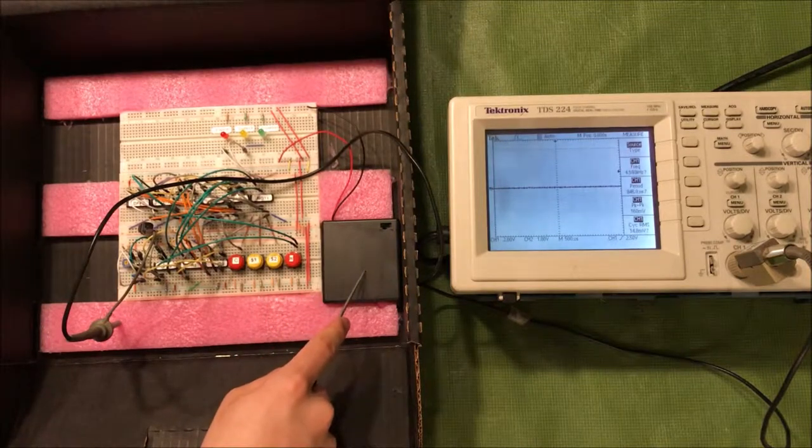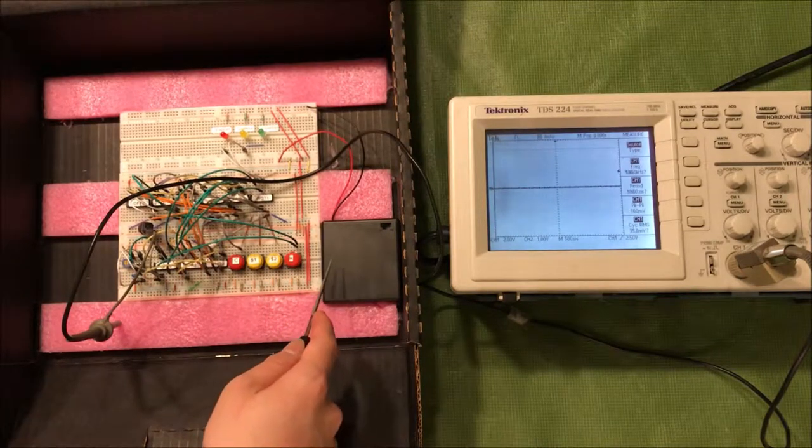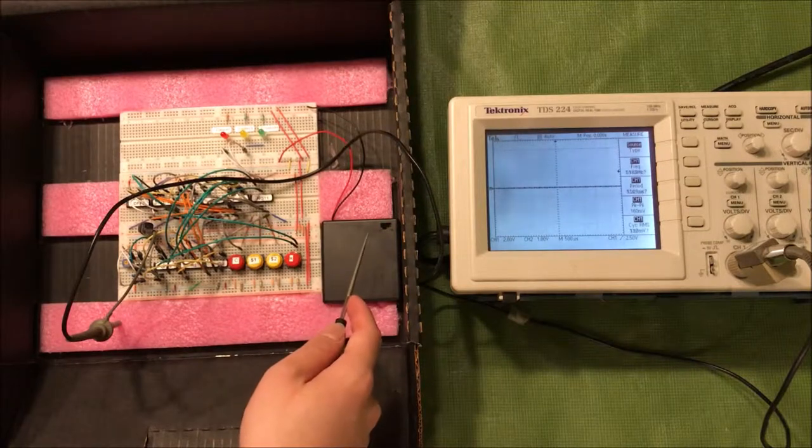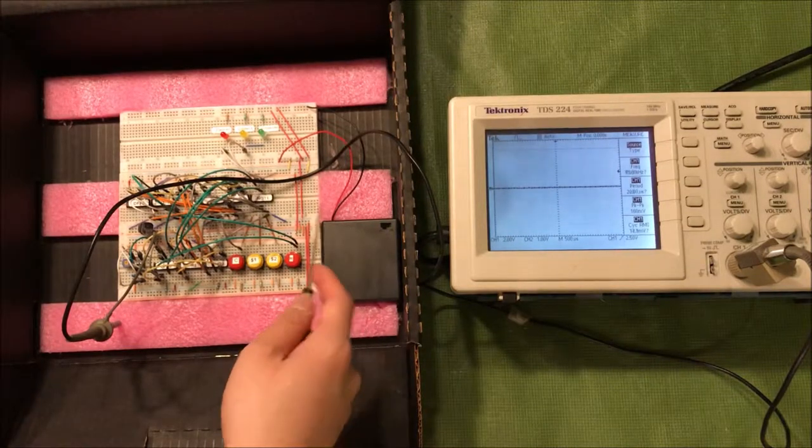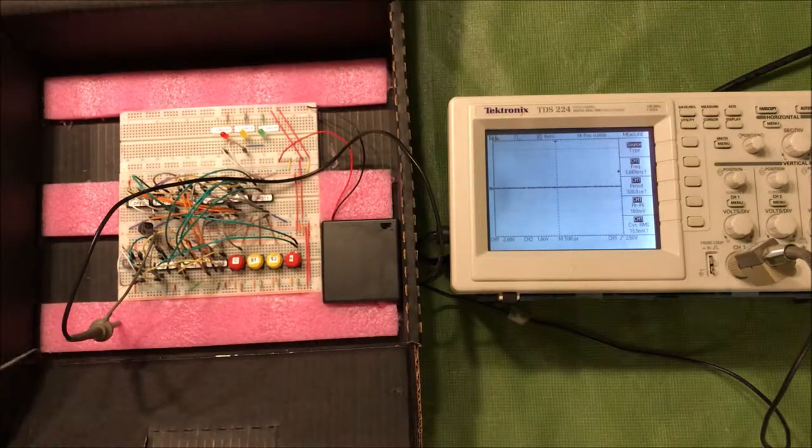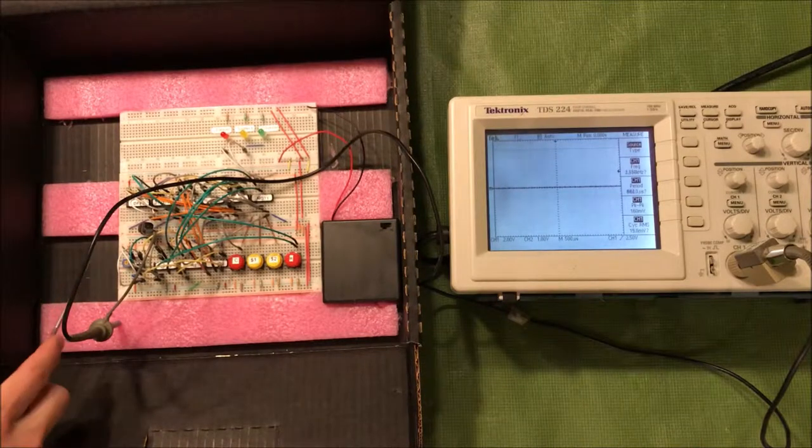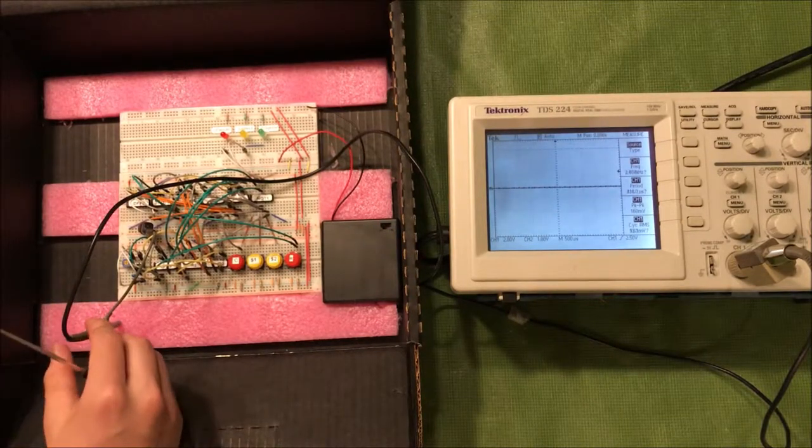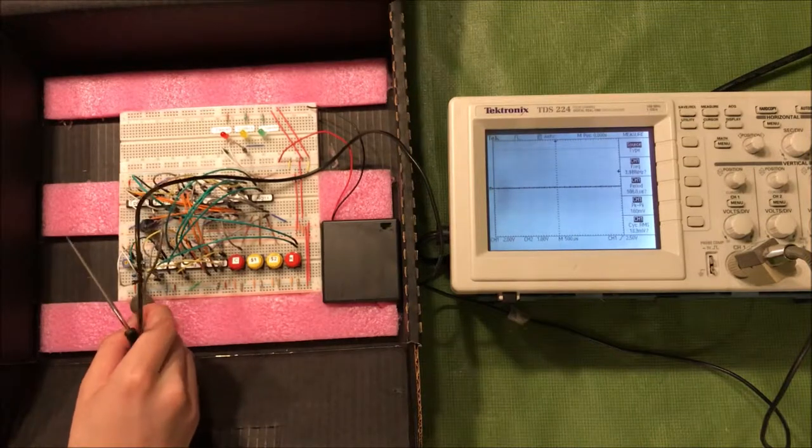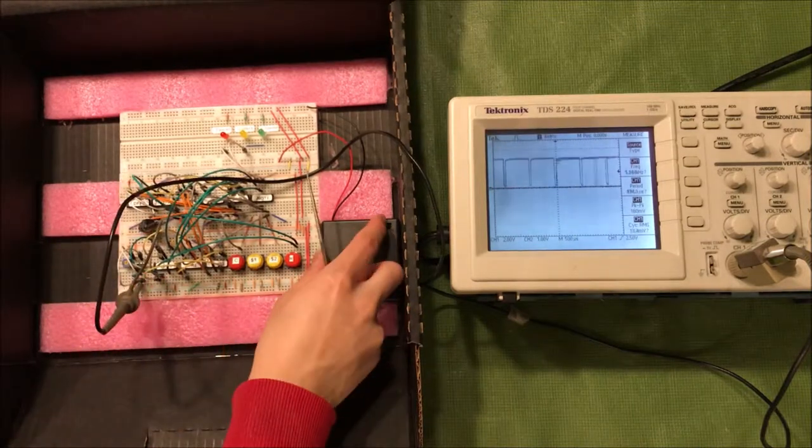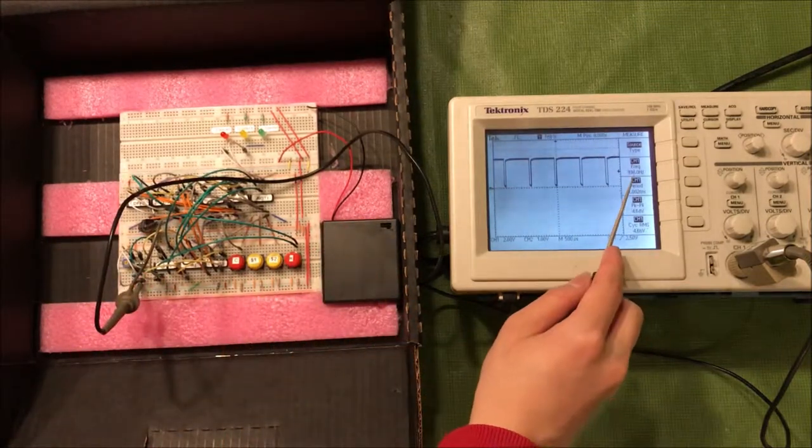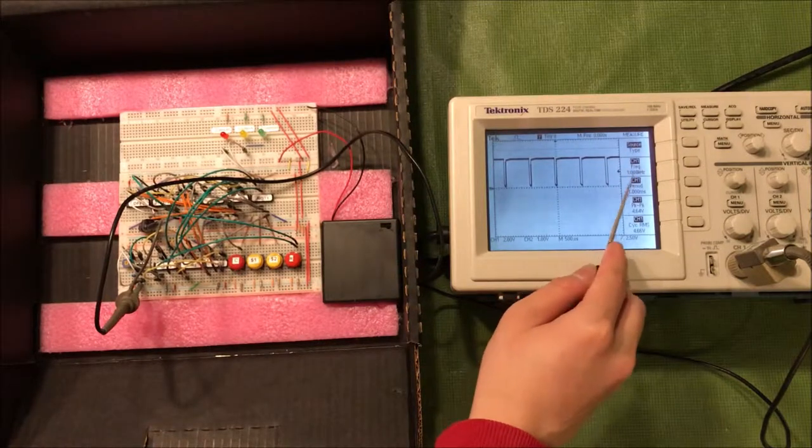The power source in total is 6 volts containing 4 AA batteries each having 1.5 volts and for the clock it's powered by a 555 timer and the frequency is 1 kilohertz which is shown on the oscilloscope over here to the right.